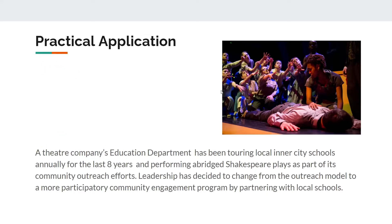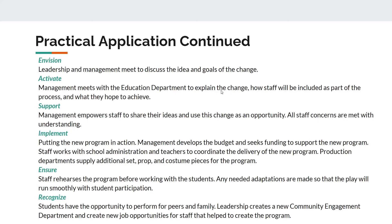Now let's discuss a practical application of the Easier Model. A theater company's educational department has been touring local inner city schools annually for the last eight years, performing abridged Shakespeare plays as part of its community outreach efforts. Leadership has decided to expand the program beyond just performing plays to creating theater programs in schools that provide opportunities for students to participate in the arts. In the Envision step, leadership and management meet to discuss the idea and the goals of the change. In the Activate step, management meets with the education department to explain the change, how staff will be included as part of the process, and what they hope to achieve to garner buy-in from critical stakeholders.